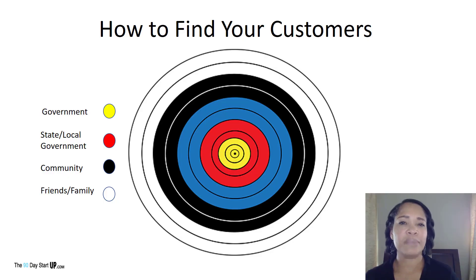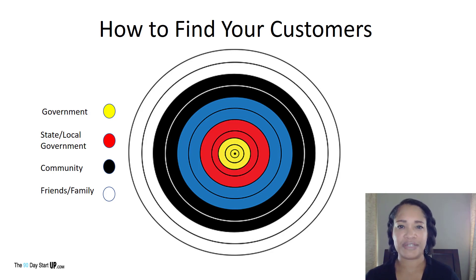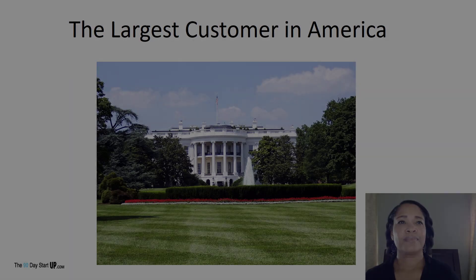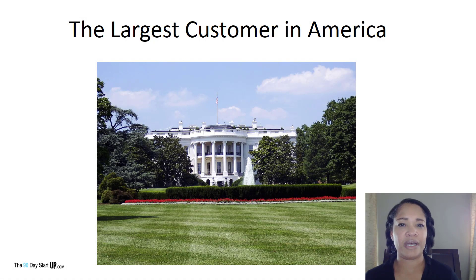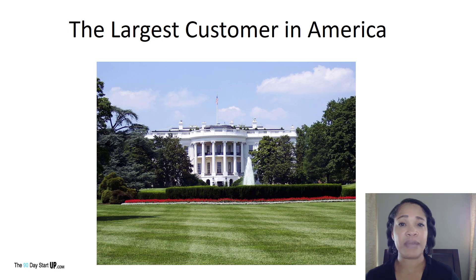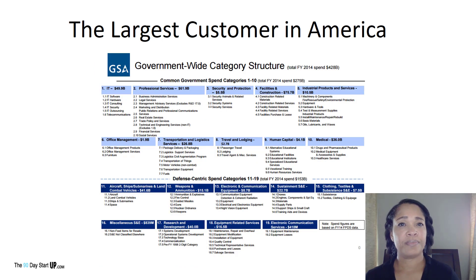Today we're going to be identifying four primary customer categories: the government, state and local government, community, and friends and family. The largest customer in America is the United States government. There are over 400 departments, government agencies, and sub-agencies combined in the United States. Here's a look at the government-wide category structure for fiscal year 2014.